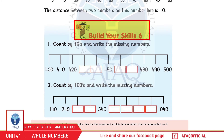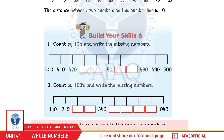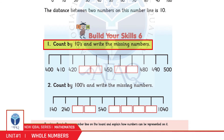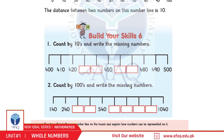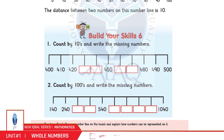Build Your Skills 6, Page 13. Question 1: Count by 10s and write the missing numbers. 400, 410, 420... अब आप बताएं।